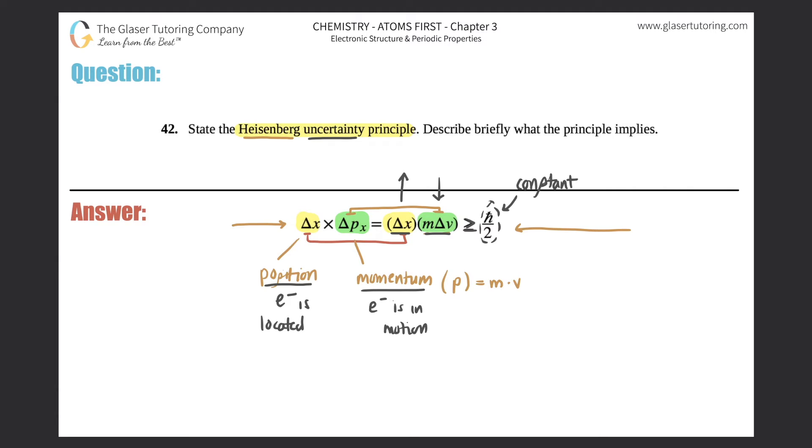And that is Heisenberg's uncertainty principle. So it's defined by this formula right here. But briefly describe what the principle implies: instead of writing it down, just know that the Heisenberg uncertainty principle states that you can definitely not for certain know where an electron is positioned and its momentum at the same time.